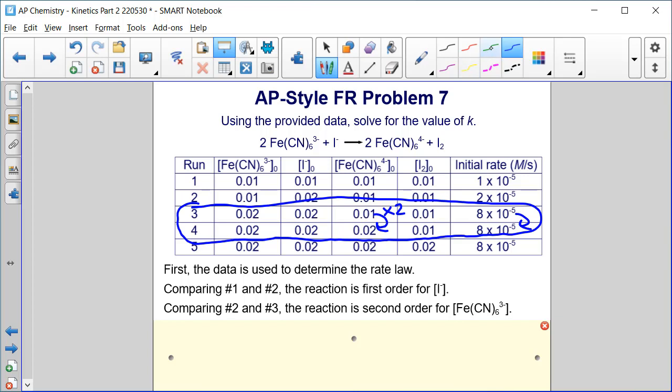Finally, looking at runs four and five, everything is constant except the I2 concentration. If we double it, there's no impact on the rate, so it's also zero order with respect to I2.